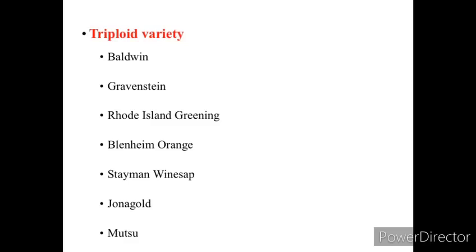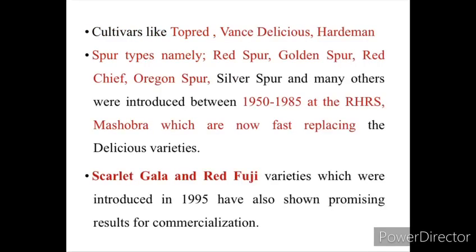There are various triploid varieties of apple like Baldwin, Gravenstein, Rhode Island Greening, Blenheim, Stayman, Winesap, Jonagold, and Mutsu. Cultivars like Top Red, Winsdelicious, Hardman, and spur types namely Red Spur, Golden Spur, Red Chief, Oregon Spur, Silver Spur and many others were introduced from 1950 to 1985 at R.H.R.S. Mashobra, which are now fast replacing the delicious varieties. Scarlet Gala and Red Fuji varieties introduced in 1995 have shown promising results for commercialization.